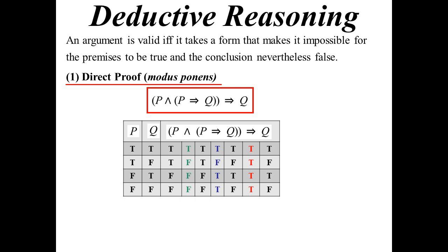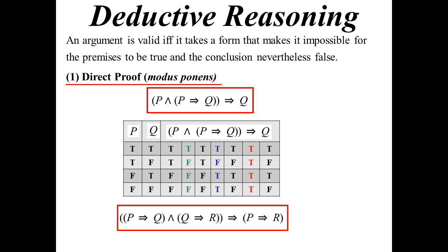This is the idea of joining different proofs together. If I know P implies Q and I know Q implies R, then it's logical to conclude that P implies R — because P implies Q, Q implies R, so P implies R. Let's do some examples.